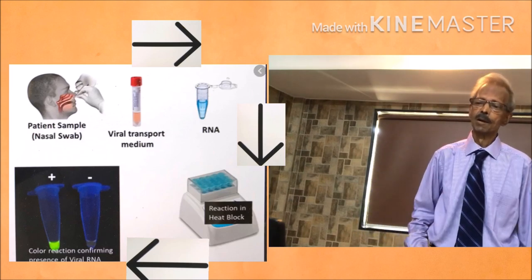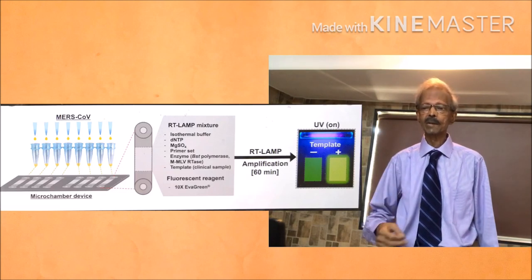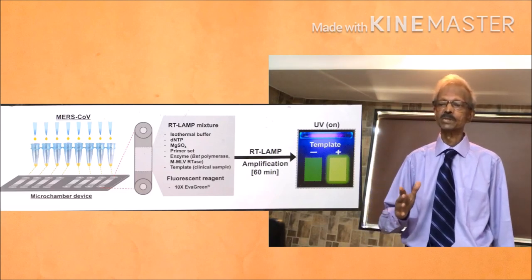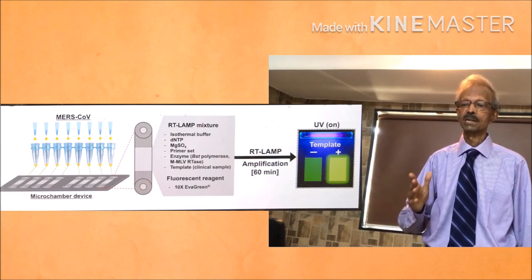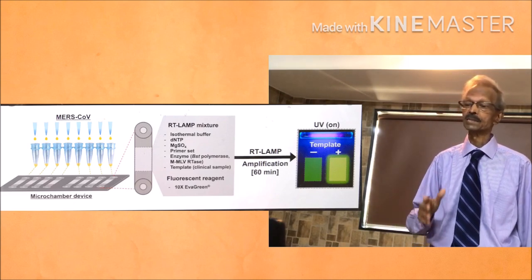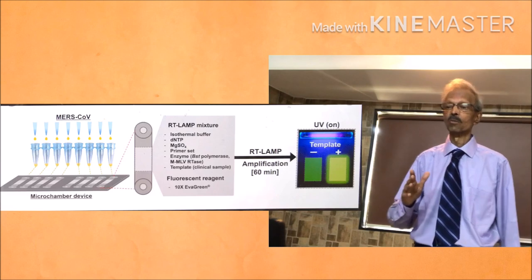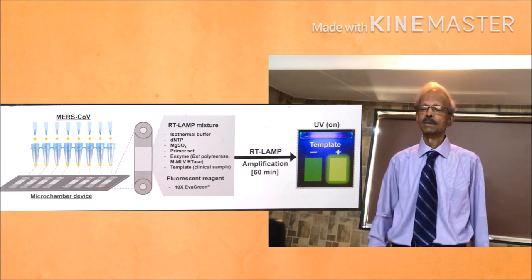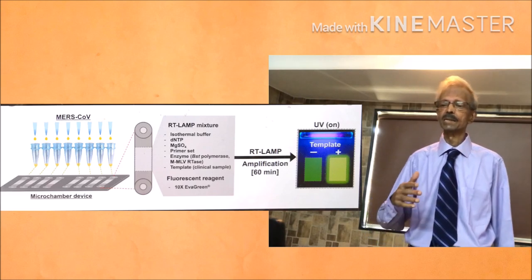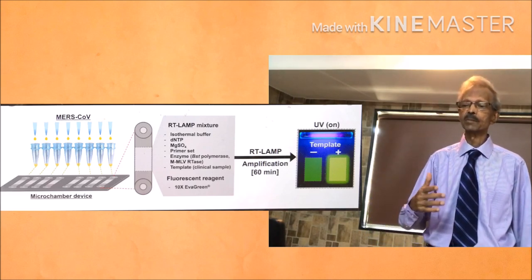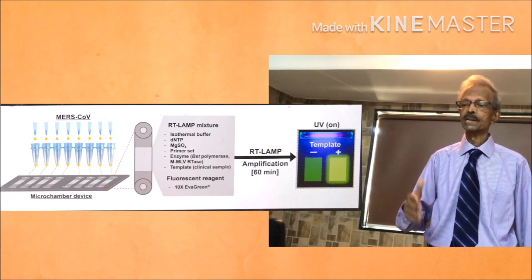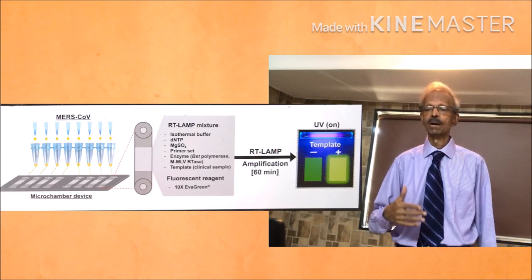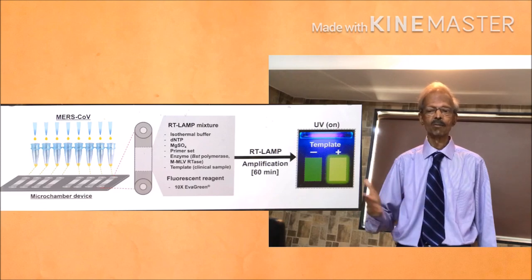Similarly, like RT-PCR, in RT-LAMP technique reverse transcriptase enzyme is used to synthesize complementary DNA (cDNA) from RNA sequences of the virus. This cDNA is then amplified using DNA polymerase, and 10⁹ copies of cDNA are produced per hour.